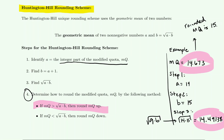You need to do this for each MQ value: find the MQ, then separately find the square root of A times B, where A is the integer part of the modified quota and B is one more than that. Then compare: if the modified quota is bigger, round up; if the modified quota is smaller, round down.